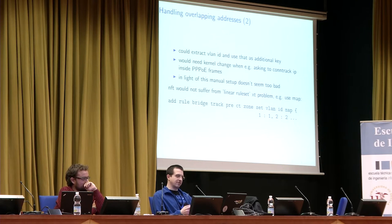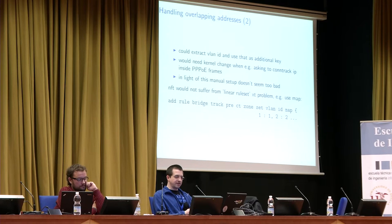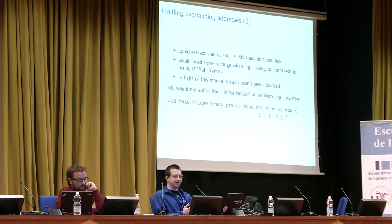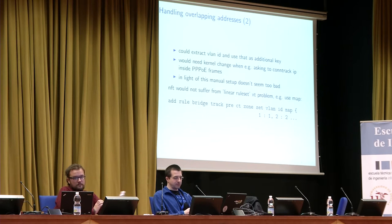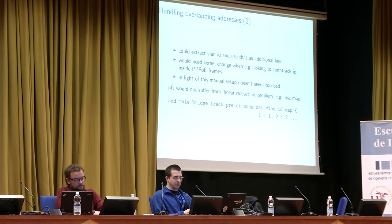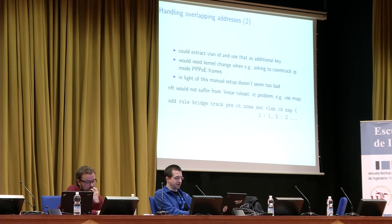Fortunately, we now have NF tables and this is not really a problem there. We could try an automatic extraction of the VLAN ID and use it as an initial key, but if you want to do connection tracking with IP packets embedded inside PPPoE frames, for instance, you would need kernel changes — which is not ideal. Furthermore, overlapping addresses could also happen with distinct bridges instead of just different VLANs. So it doesn't seem too bad to just enforce manual configuration, and in NF tables we don't have the linear ruleset problem anyway because you can use things like maps to map VLAN IDs to zones or input interfaces.